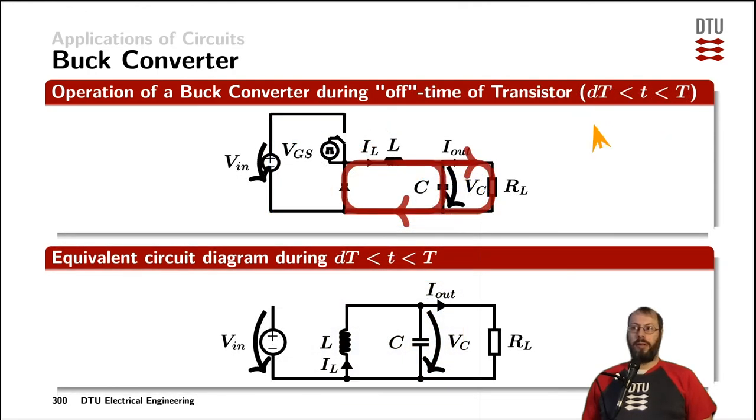During the off time of the switch, that means after the duty cycle times the period time T and all the way up until we are repeating the operation at the period time T, the switch is off. That means the inductor current, which cannot jump, is still providing current to the output capacitor and the load, and the return current forces the diode to conduct and closes the circuit.